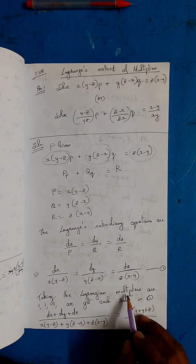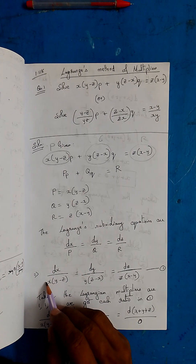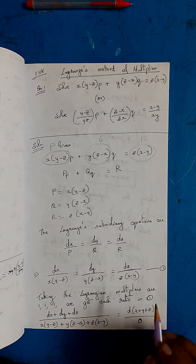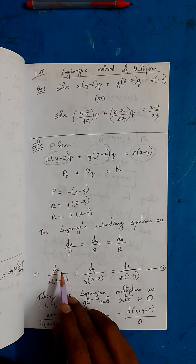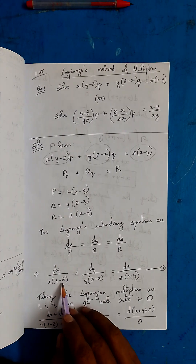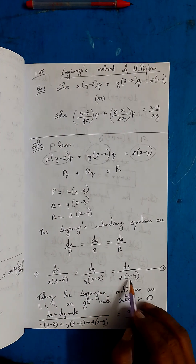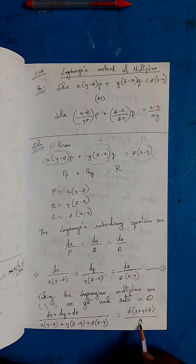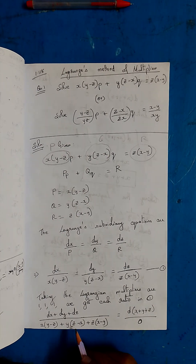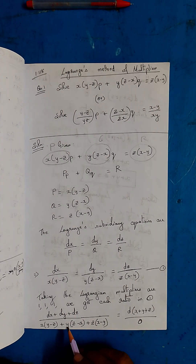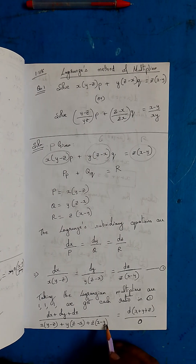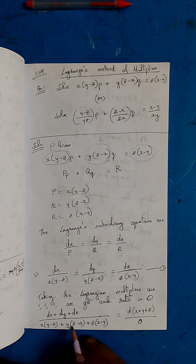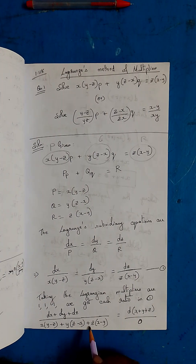Taking Lagrange multipliers as 1, 1, 1 and adding numerators and denominators: dx + dy + dz is over x(y−z) + y(z−x) + z(x−y). Expanding the denominator: xy − xz + yz − xy + zx − yz = 0. All terms cancel, so the denominator is 0.